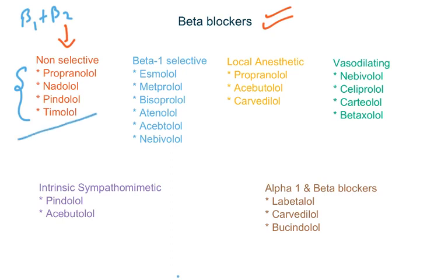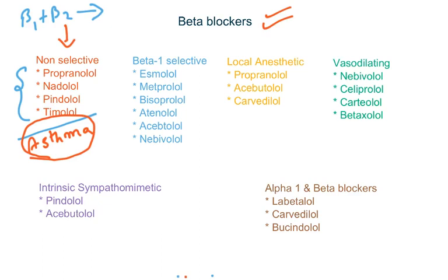The problem with non-selective beta blockers is that while blocking beta1 receptors reduces heart rate and can treat certain cardiac diseases, blocking beta2 receptors may cause bronchoconstriction, which is not good for asthmatic patients. So when an asthmatic patient takes a non-selective beta blocker, these drugs may precipitate bronchoconstriction. The next category is beta1-selective agents: esmolol, metoprolol, bisoprolol, atenolol, acebutolol, and nebivolol. All these drugs are selective towards beta1 receptors present on the heart, so they can be used in asthmatic patients with fewer side effects.